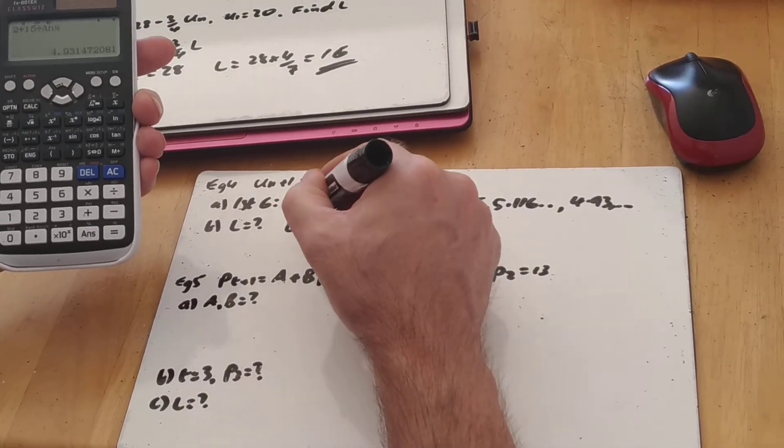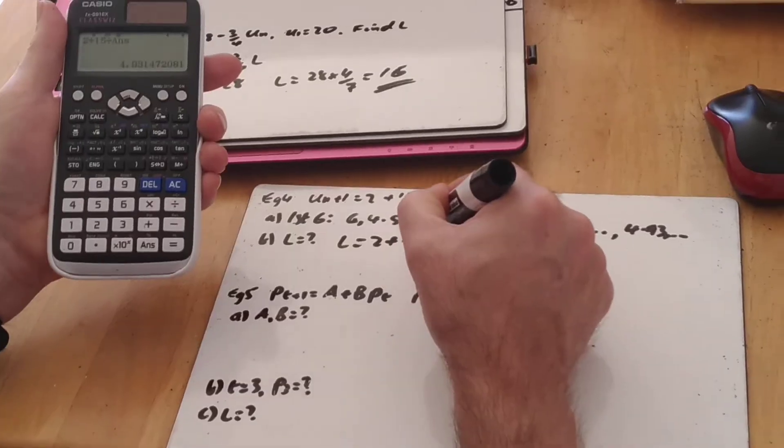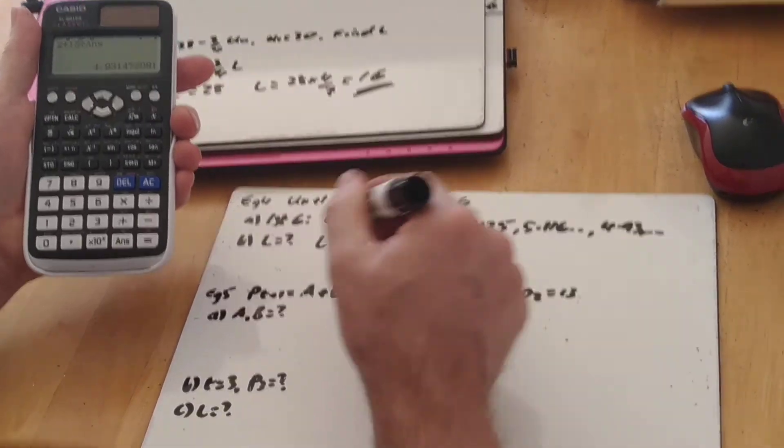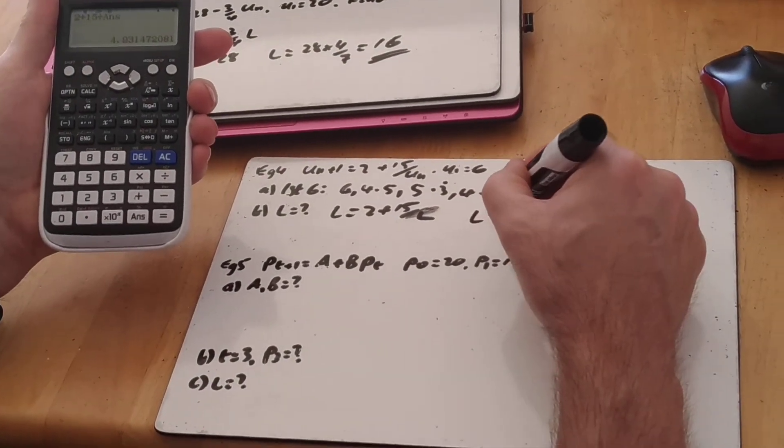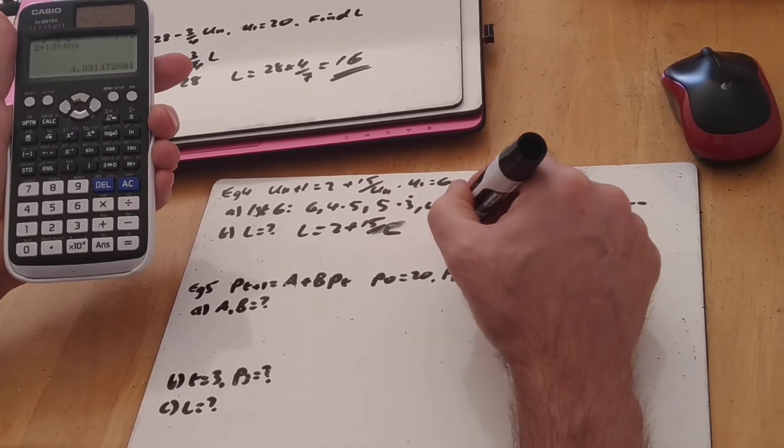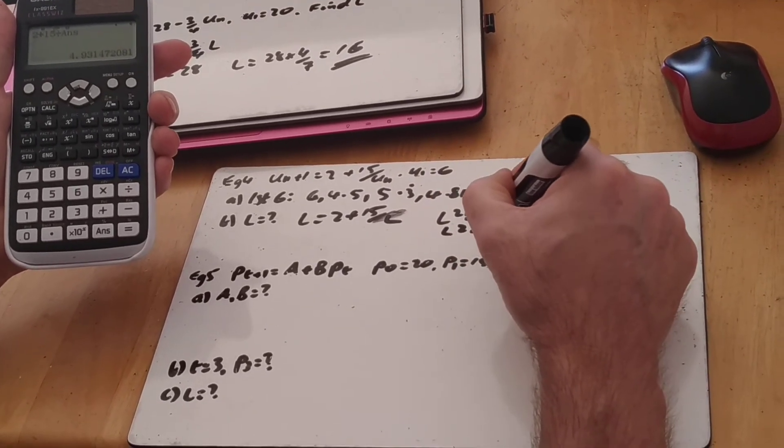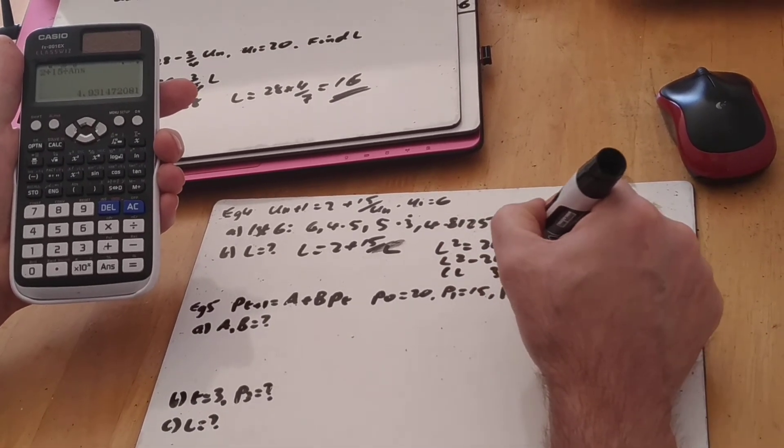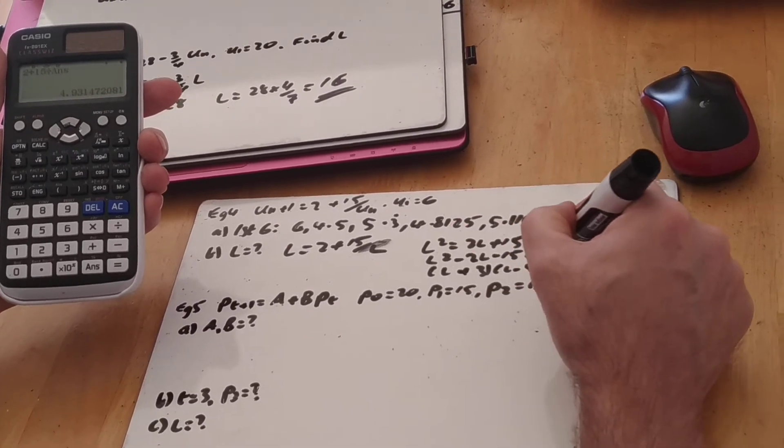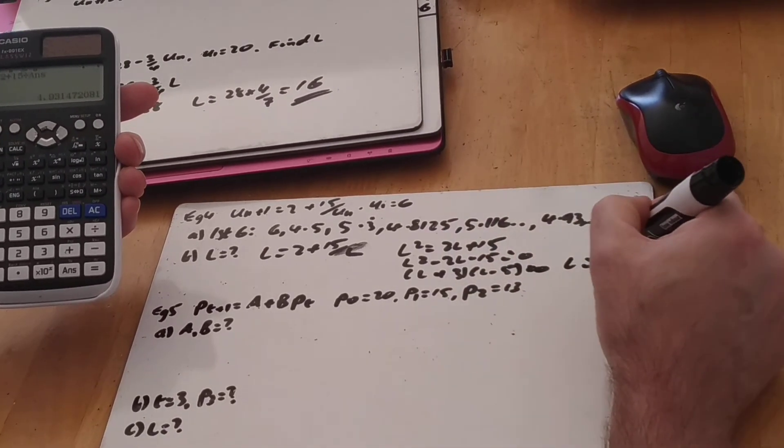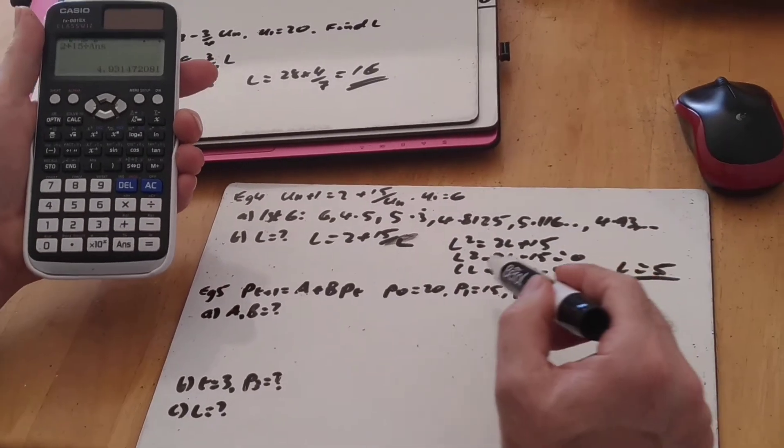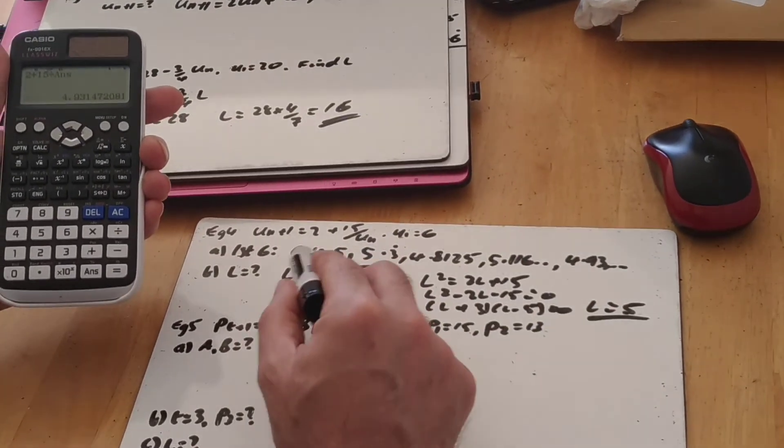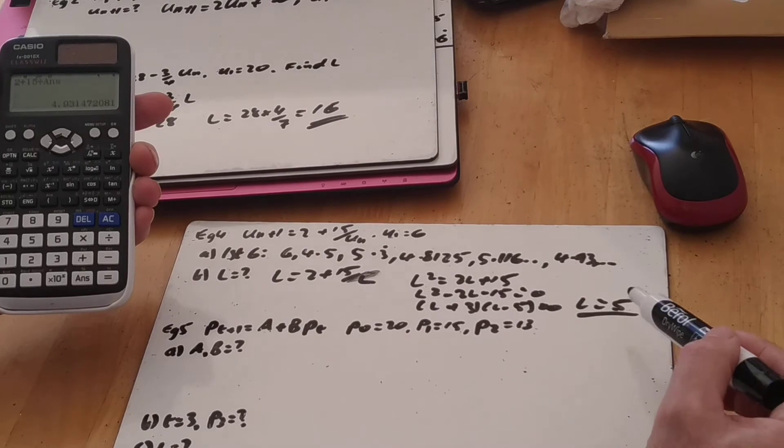Our limiting value, solve L equals 2 plus 15 over L. In this case, it's going to give us a quadratic. So we're times by L to get L squared equals 2L plus 15. L squared minus 2L minus 15 equals 0. Factorizes to (L minus 5)(L plus 3) equals 0. So L equals 5 or L equals minus 3. Because L can't be minus 3. It's not going to turn towards a negative value because it's oscillating somewhere between 6 and 4.5. It has to be a positive value. So L is 5.